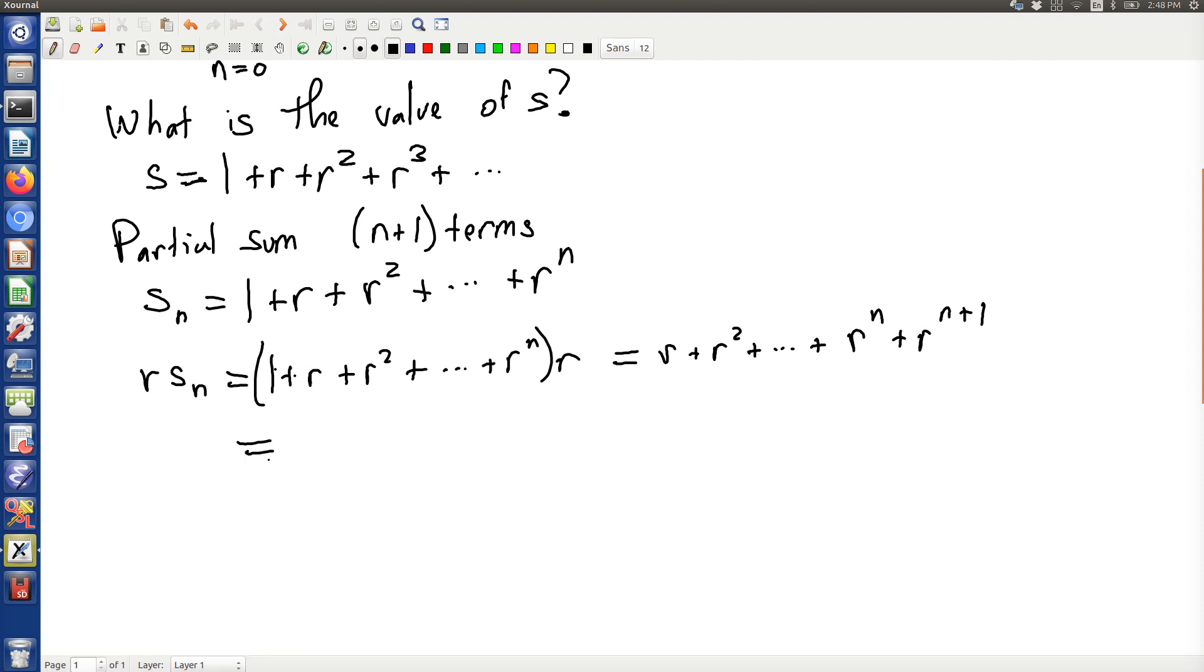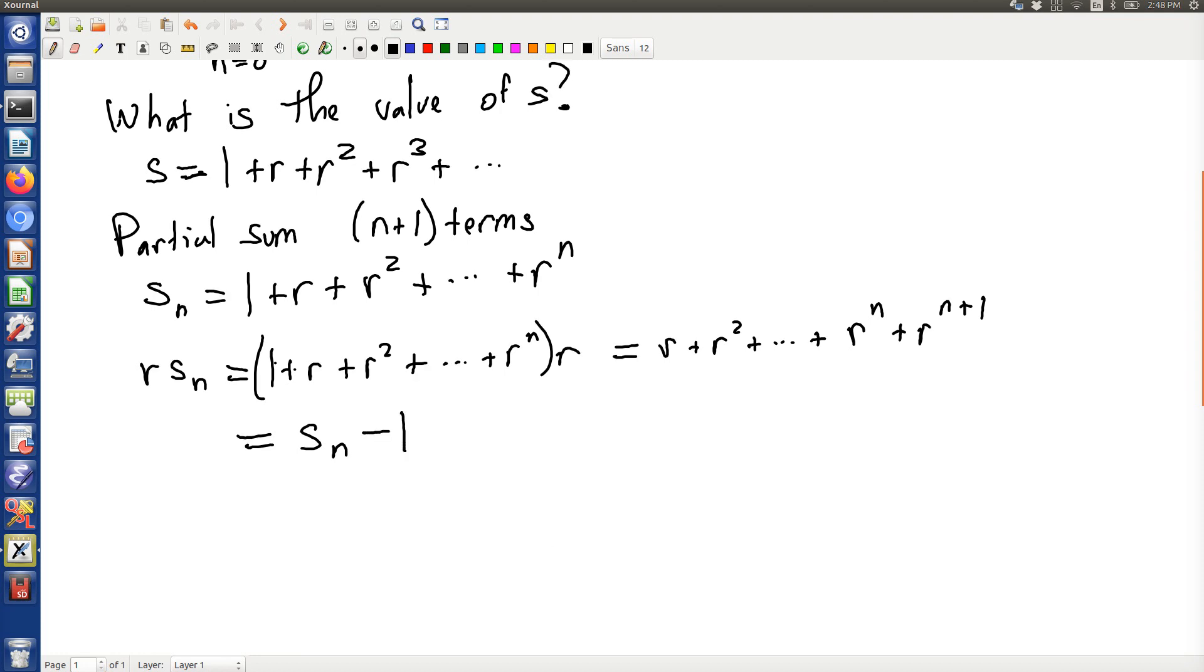And so you can say well this is basically Sn without the leading 1 and with an extra term, an r to the n plus 1, that wasn't there. So it's basically Sn but without the first term and with a different last term.